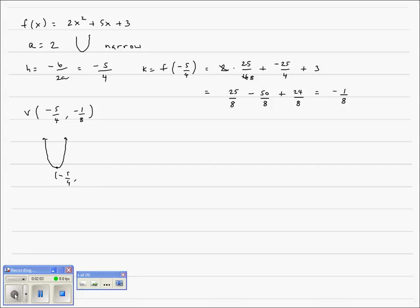And this is a minimum negative 1 eighth. We have a local minimum. That's what this point would be. And it would be at the negative 5 fourths, and its value would be that negative 1 eighth.